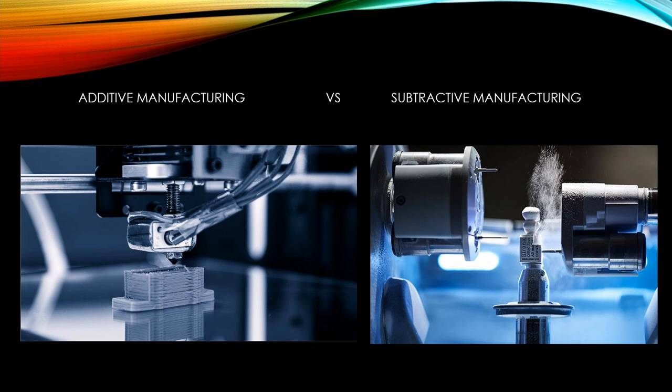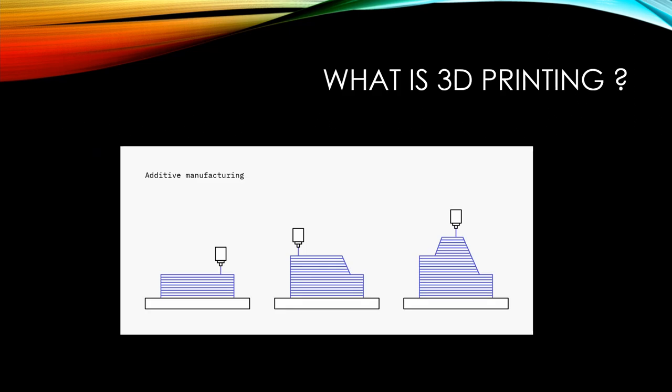The two manufacturing approaches are additive manufacturing and subtractive manufacturing. Additive manufacturing builds the object from scratch, layer by layer. In subtractive manufacturing, we have a block of material — for example a ceramic material — and we subtract from it until the desired shape is obtained.